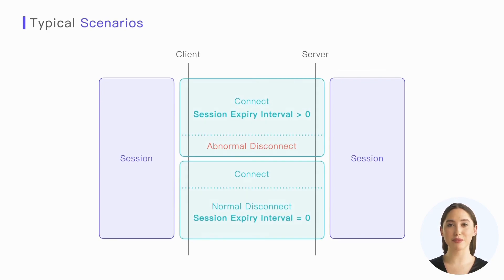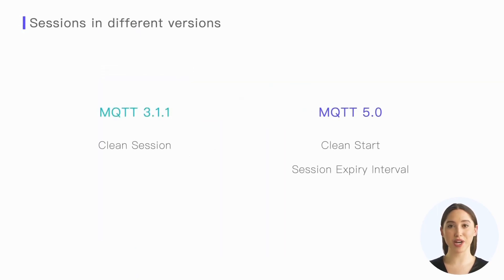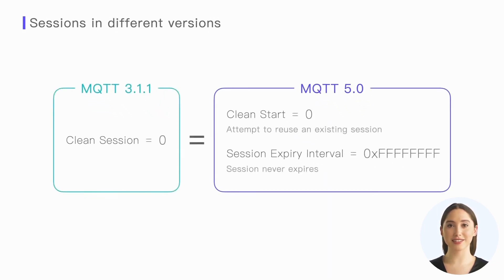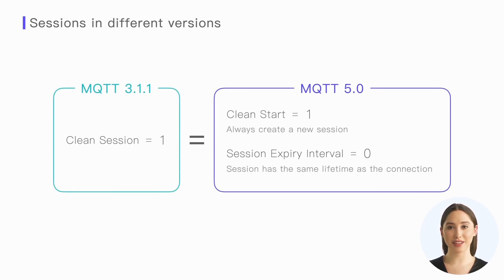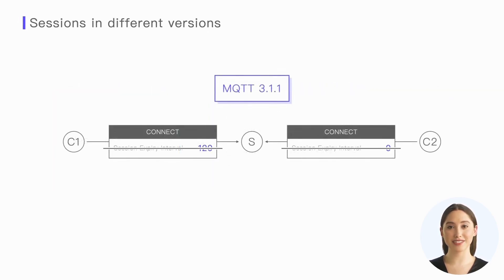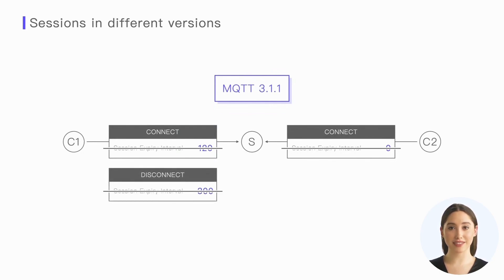It should be noted that the above discussion pertains to the session implementation in MQTT 5.0. Although MQTT 3.1.1 also has the session mechanism, it lacks the flexibility of version 5.0. MQTT 3.1.1 has only one field called Clean Session, which can only take two values: 0 and 1. Setting it to 0 is equivalent to setting Clean Start to 0 in MQTT 5 with the session set to never expire. Setting it to 1 is equivalent to setting Clean Start to 1 in MQTT 5, with the session lifecycle aligned with the network connection. In MQTT 3.1.1, we cannot set different session expiry intervals for different clients, nor can we update the session expiry time when a client disconnects — leading to sessions being stored on the server for a long time, resulting in resource wastage.